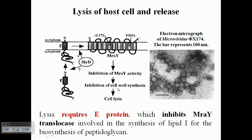As cell wall synthesis is halted, the release of enzymes simply lyses the cell, because the cell wall is important to provide the bacteria a mature and steady structure. Without the cell wall, the bacteria cannot survive — it will lyse and die. All the phage particles come out and are ready to infect other cells. That's how the whole process of release occurs.